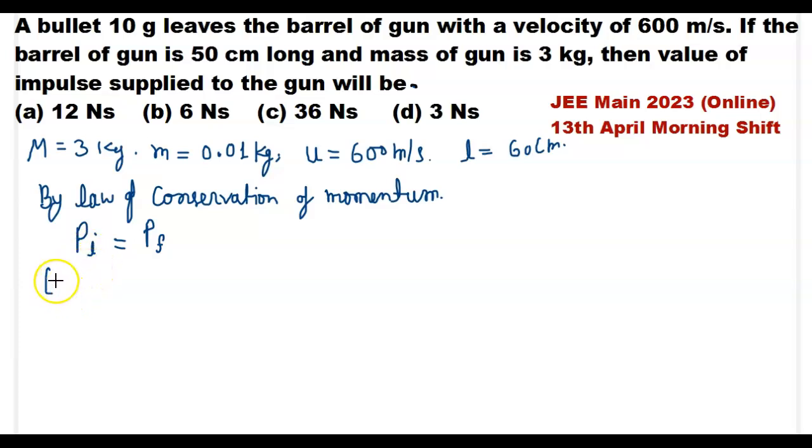Momentum of gun-bullet system before firing is equal to momentum of bullet plus momentum of gun after firing. Here we put the values. Capital M is 3 kg and small m is 0.01 kg times velocity before firing which is 0.